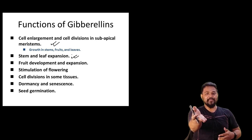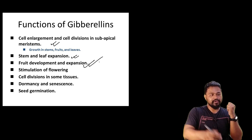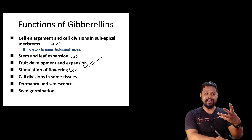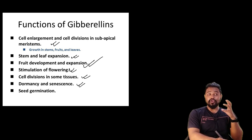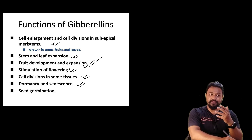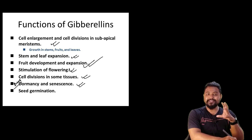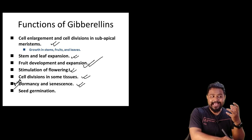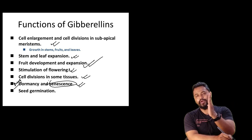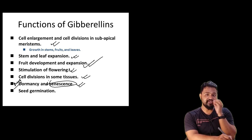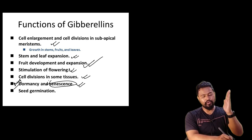Like the video and subscribe to the channel. The functions include food development and expansion, stimulation of flowering, cell division in some tissues, and dormancy. Gibberellin helps break dormancy. Naturally, leaves fall — normal senescence.